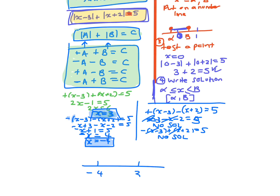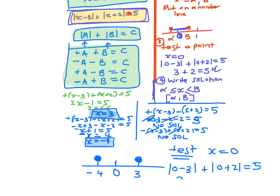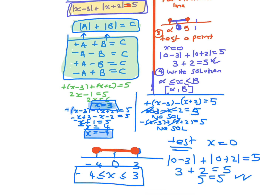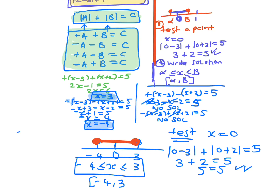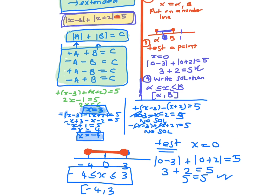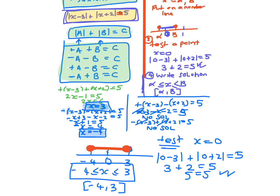We place minus four and three on a number line. Since it's equalled at both points they get filled-in circles. Now test x equals zero — zero is always the easiest: absolute value of zero minus three plus absolute value of zero plus two equals five; absolute value of minus three is three, absolute value of two is two, three plus two equals five, so it's true. That means the solution is all x in between minus four and three, which we can write as minus four ≤ x ≤ three, or in interval notation as [−4, 3].